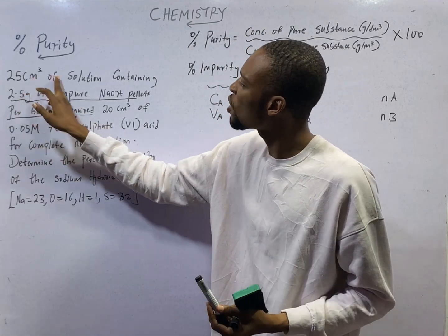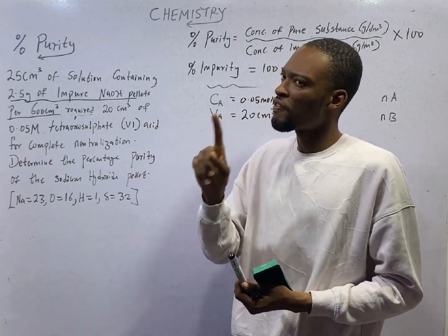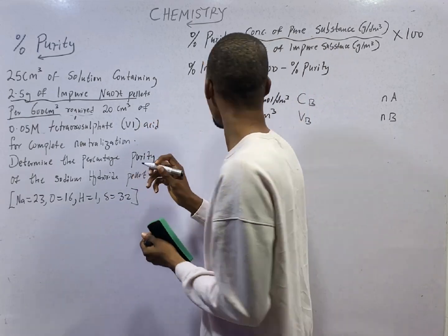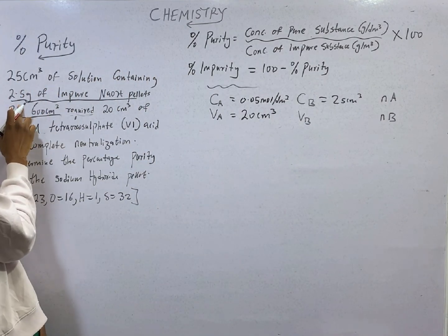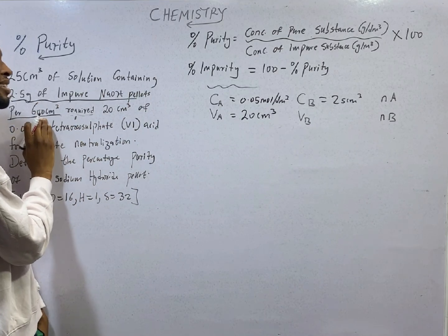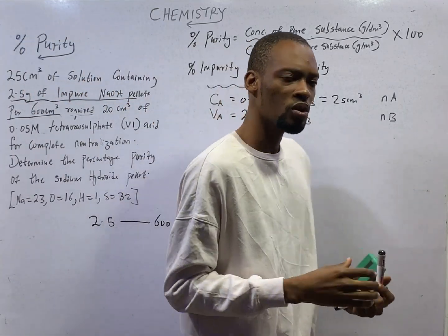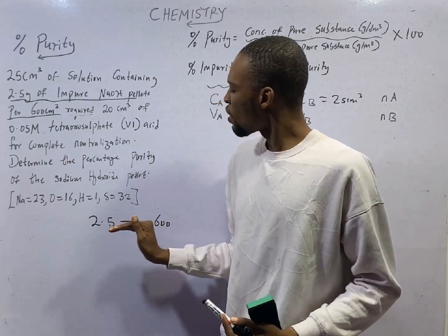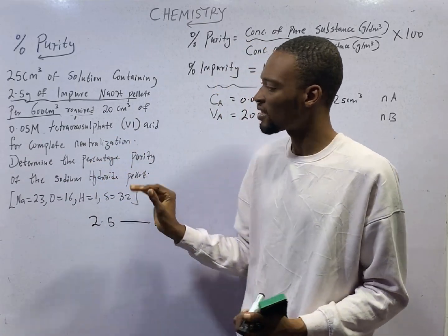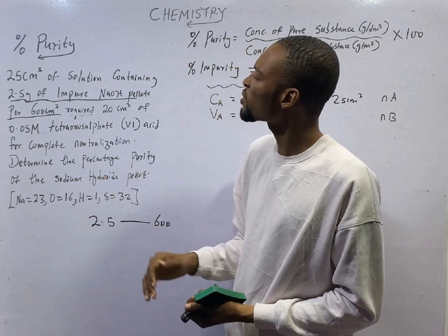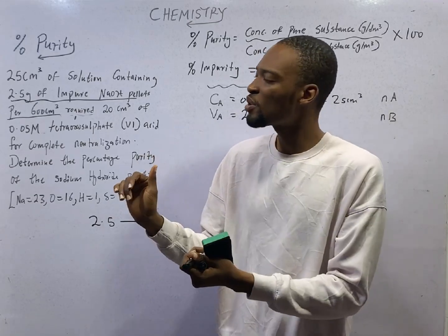Now look at this: 25 cm³ of solution containing 2.5 grams of impure sodium hydroxide pellets per 600 cm³. The first thing we take from that line is volume of base = 25 cm³. The second thing is that we have 2.5 grams of impure sodium hydroxide pellets per 600 cm³. When it comes to concentration, we don't work with per any cm³ apart from dm³ — either 1 dm³ or 1000 cm³. So we need to convert 2.5 g per 600 cm³ into a molar solution per 1000 cm³ or 1 dm³.